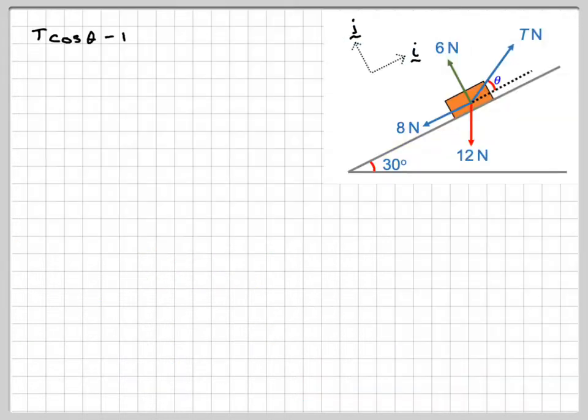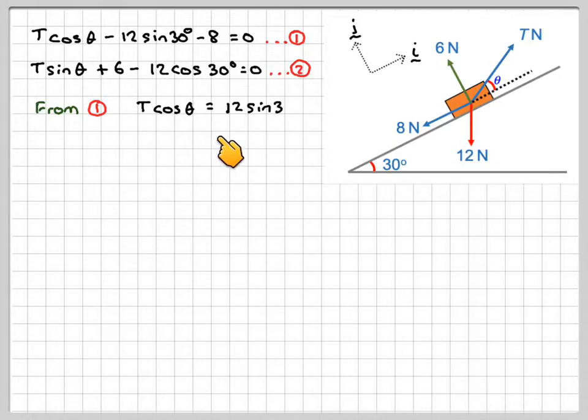We should be able to solve them. So I'm writing out everything again. So from equation 1, we can say that T cos theta is equal to 12 sine 30 plus 8. And then from equation 2,